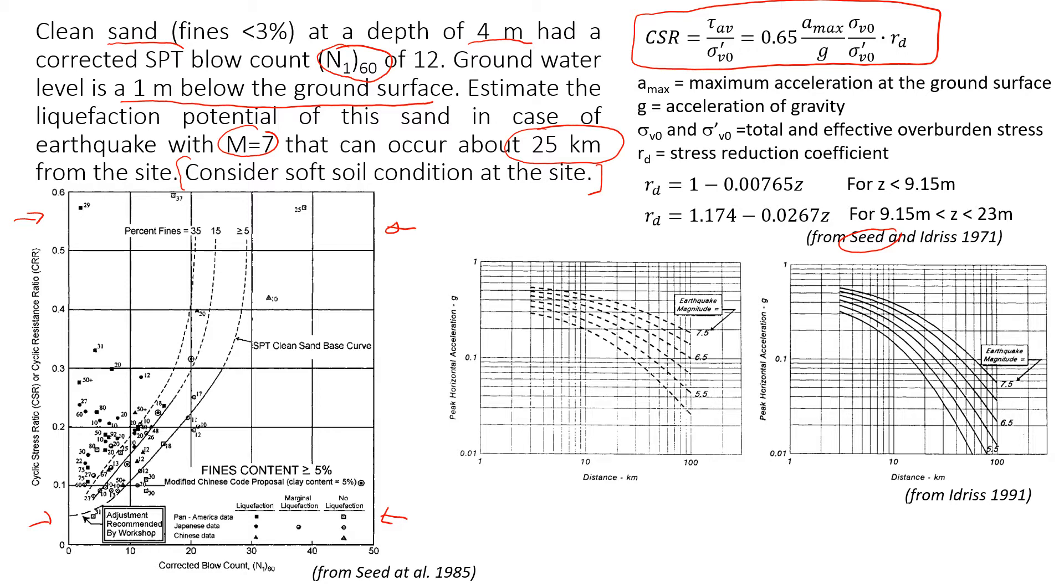To do that, we're going to use this procedure to calculate cyclic stress ratio. You will see that what we need to know is peak acceleration at the surface, and we need to know the effective vertical stress and the total stress as well. And there is this coefficient, it's called stress reduction coefficient. We can roughly estimate it using these two empirical formulas.